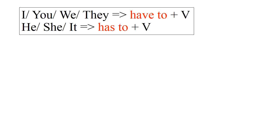Ở phần này, Miss Nhung giải thích bằng tiếng Việt cho các bạn dễ hiểu. Khi nào chúng ta sử dụng 'have to'? Chúng ta sử dụng 'have to' khi cần phải làm một việc gì đó. Với những chủ ngữ I, you, we, they, chúng ta dùng 'have to.' Với những chủ ngữ he, she, it, chúng ta dùng 'has to.' Và sau 'have to' hay 'has to' là một động từ nguyên mẫu.